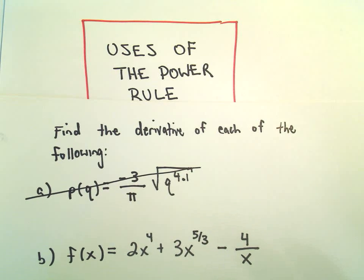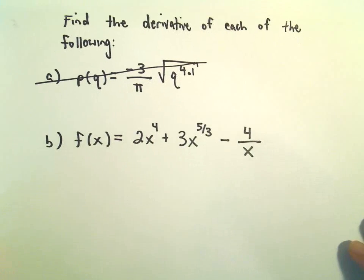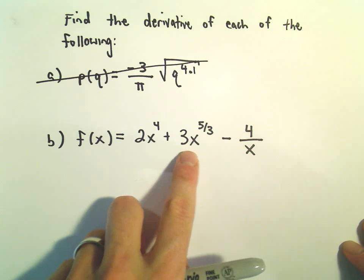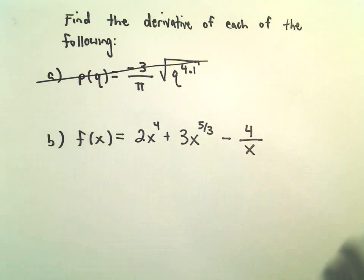Okay, so here we're going to do another derivative problem. Part b, we have f of x equals 2x to the 4th plus 3 times x to the 5 3rds minus 4 over x.